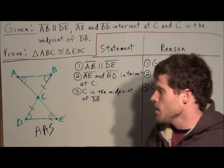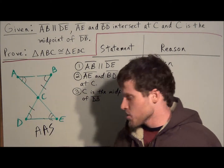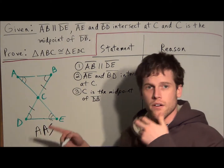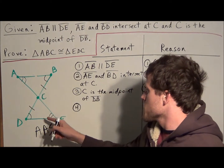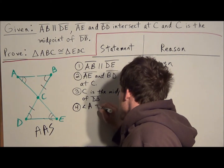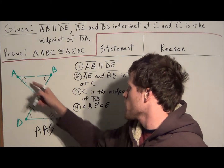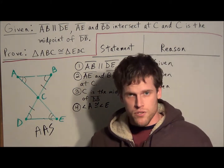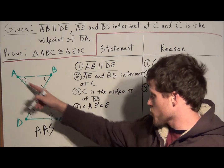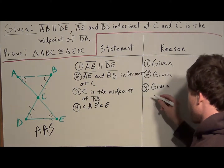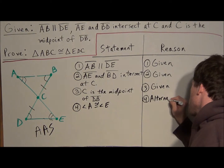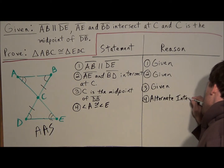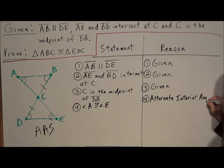Now we march through the proof. We still need to establish two pairs of congruent angles and a pair of congruent sides. Starting with the first pair of angles: angle A is congruent to angle E. Why? Because they are alternate interior angles formed by parallel lines AB and DE with transversal AE. The reason is the alternate interior angles theorem.